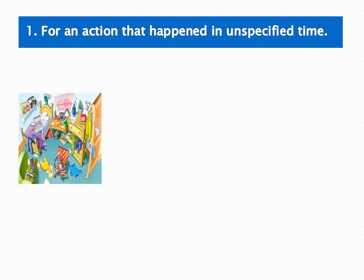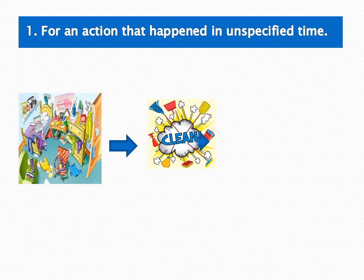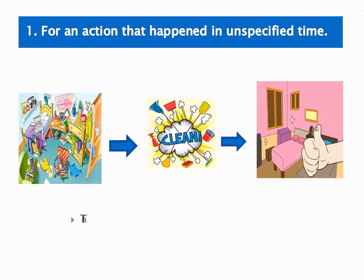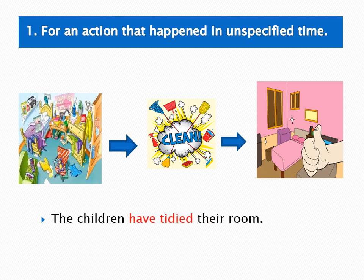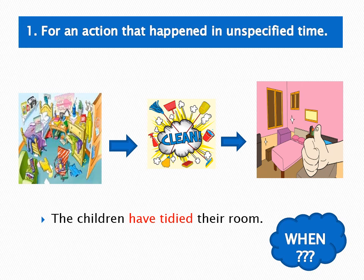Now we move to the functions of the present perfect tense. The first function is for an action that happened at an unspecified time — we do not know the time exactly. Look at the picture of the room. We can see the sentence: 'The children have tidied their room,' so the room becomes clean. We use this when we do not know when they cleaned the room.